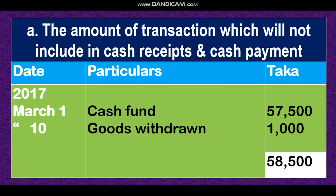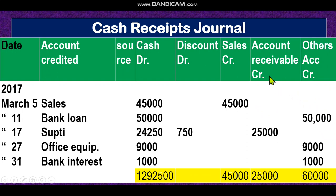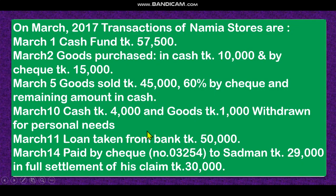Now for the cash receipt journal — the format is important. First write the date on which we receive cash money. Then write account credited — whichever account is credited in the journal entry is recorded here. Then source, if any. The debit columns are cash account and discount account. The credit columns are sales account, accounts receivable, and others account for anything other than sales or accounts receivable.